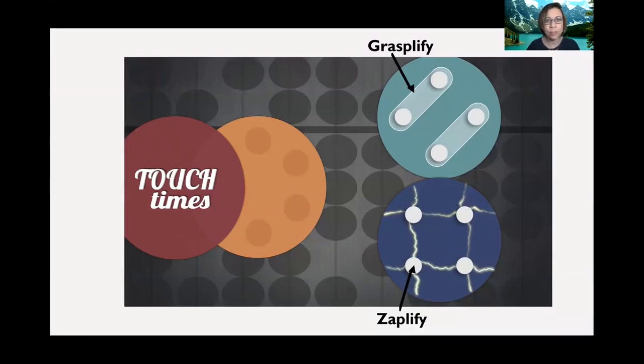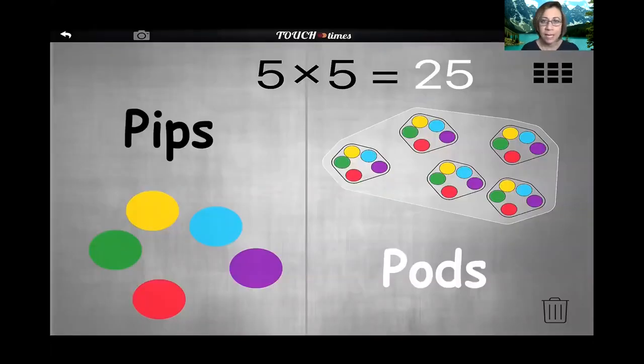Touch Times has two worlds, the Graspify world, which is the focus of this video, and the Zappify world. In Graspify, learners use their fingers to create pips and pods. Recent research shows that fingers can be powerful tools for understanding and expressing number. The intent of the Touch Times design is for learners to notice the relation between the number and color of pips and the shape and content of the pods, as this is the basis for the multiplicative operation.